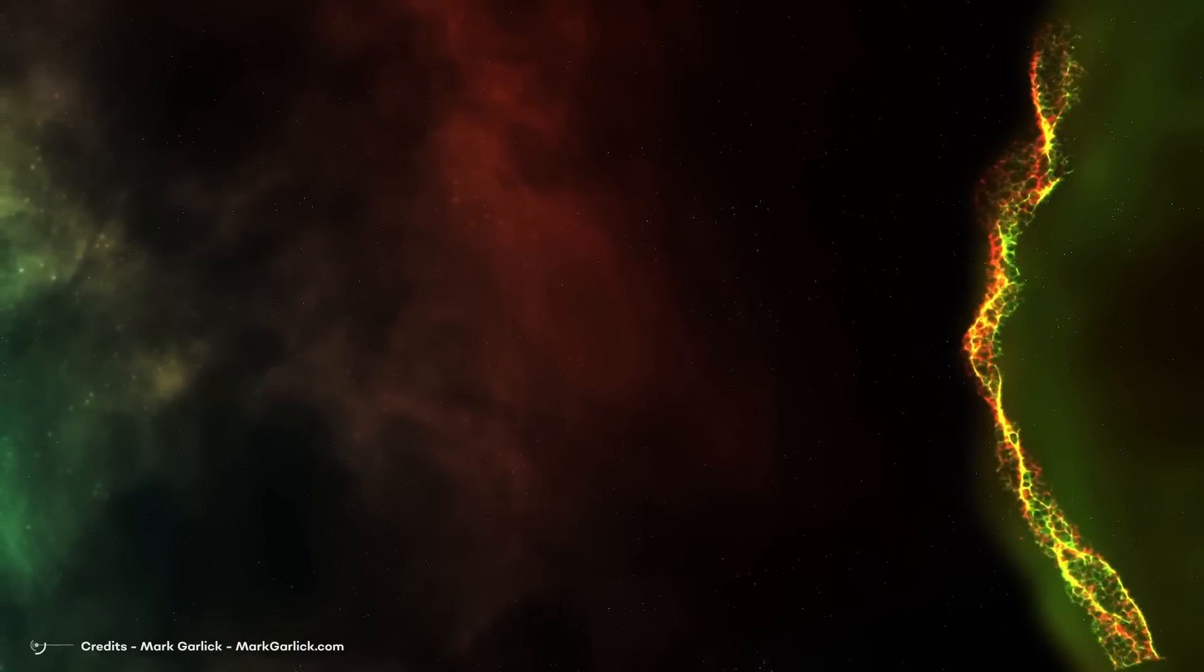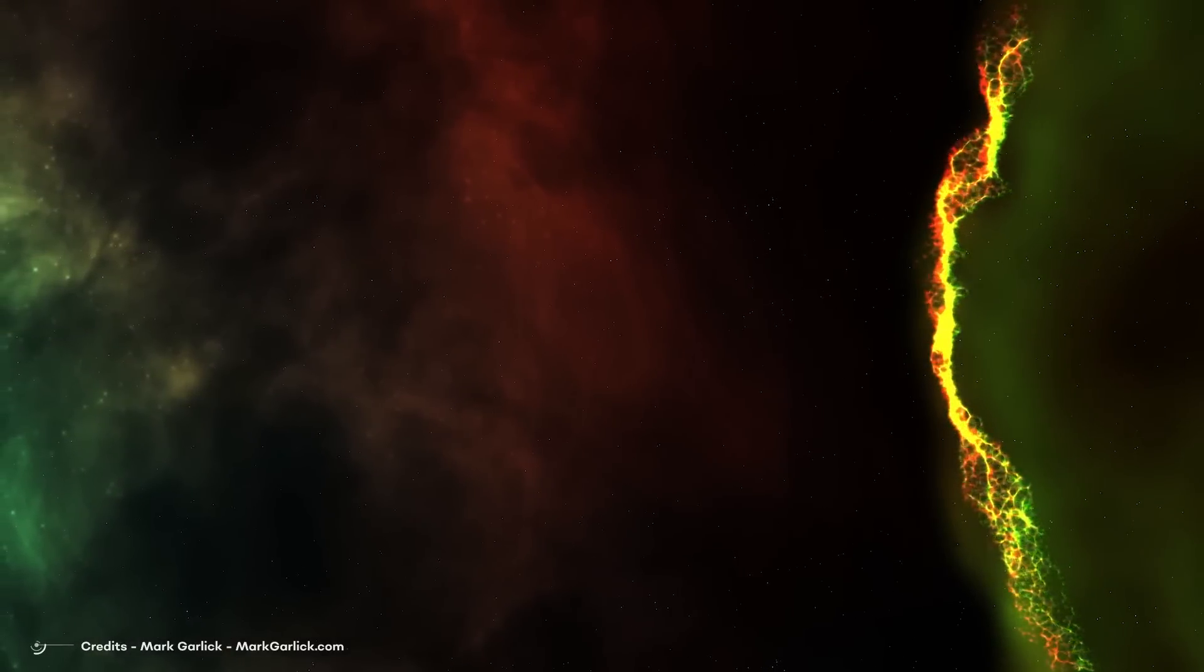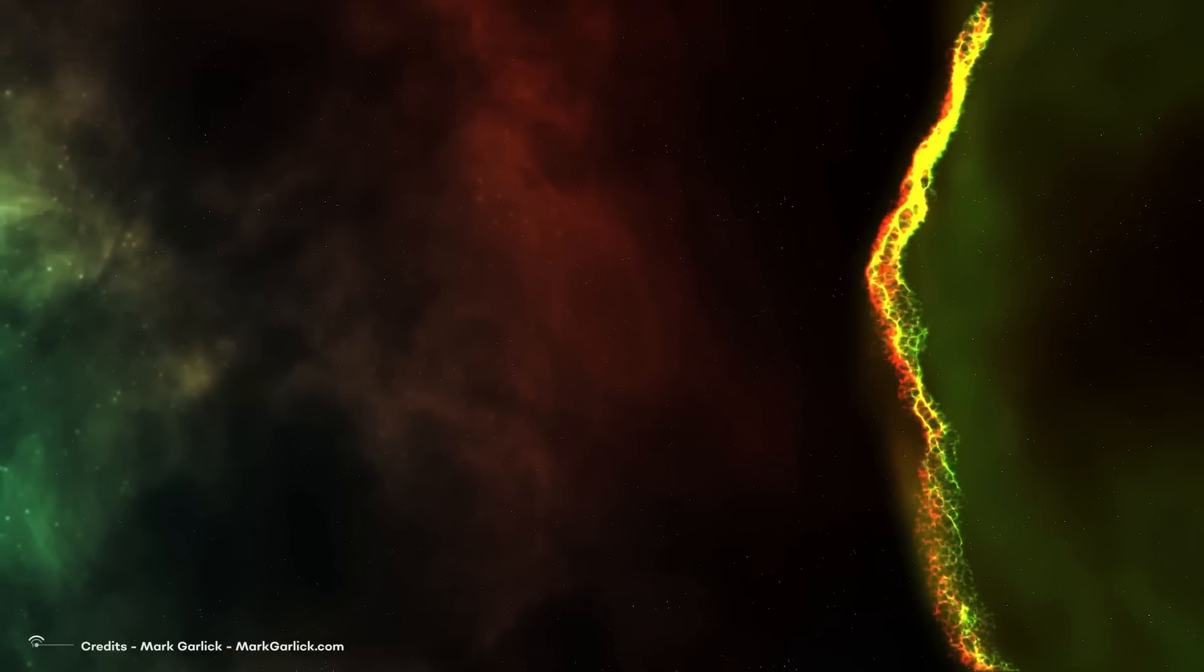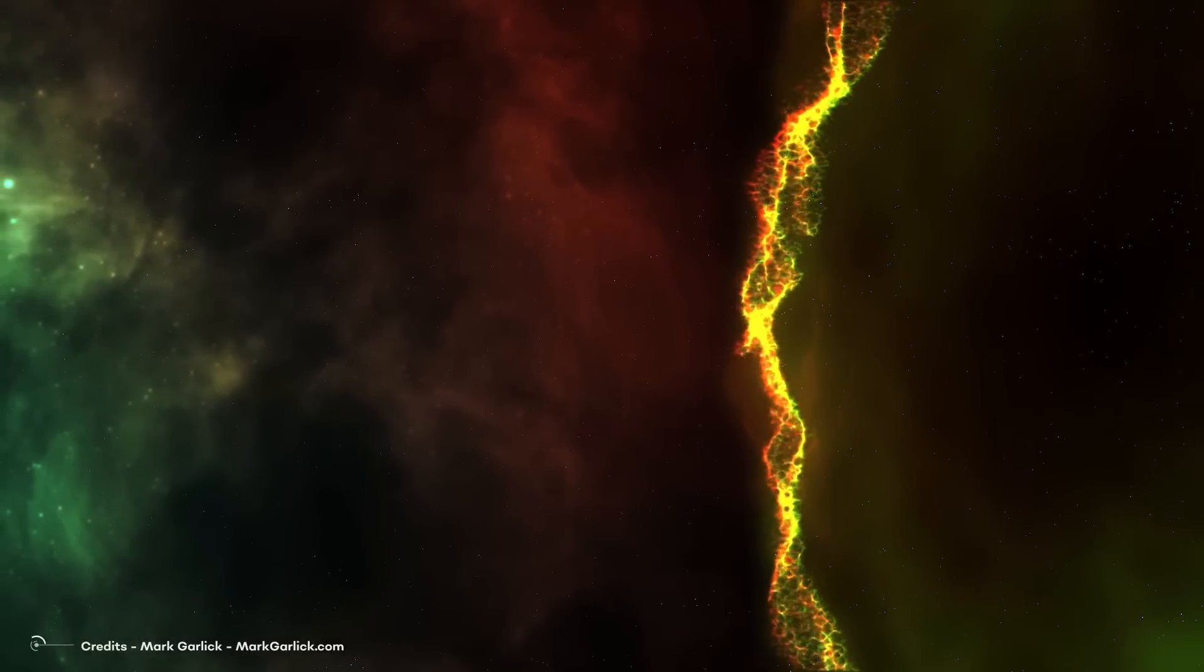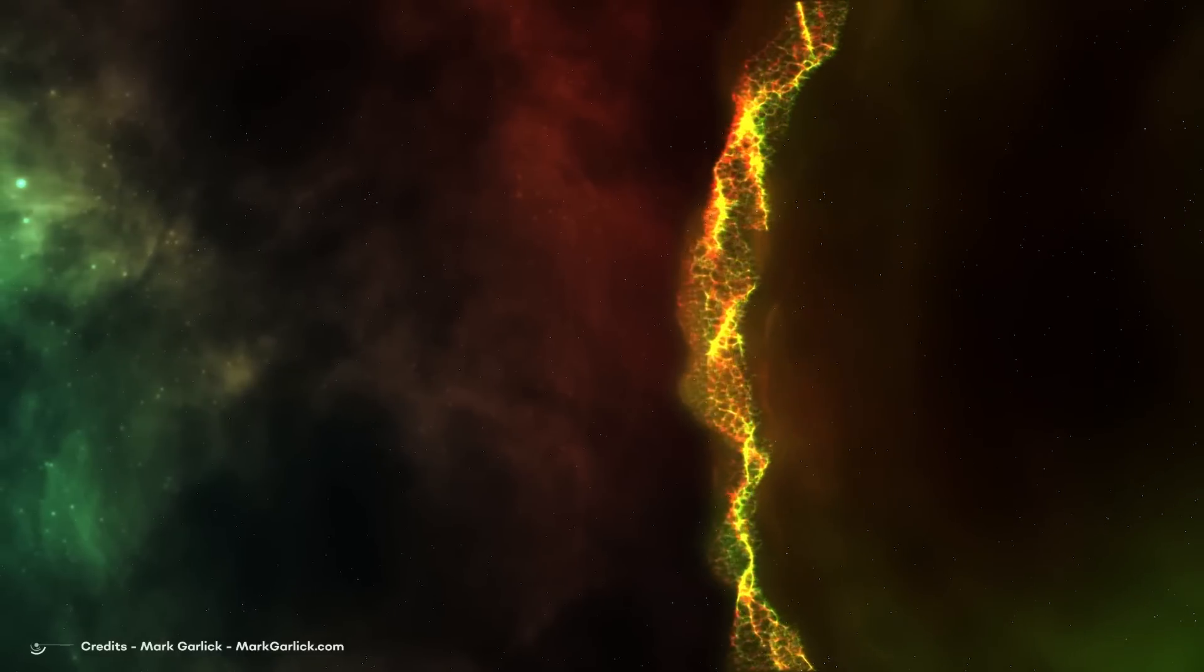For example, if the red giant star Betelgeuse were to go supernova on us, we could detect its neutrinos hours or even days before the explosion was visible. And this is how we know that it won't just explode randomly at any moment.